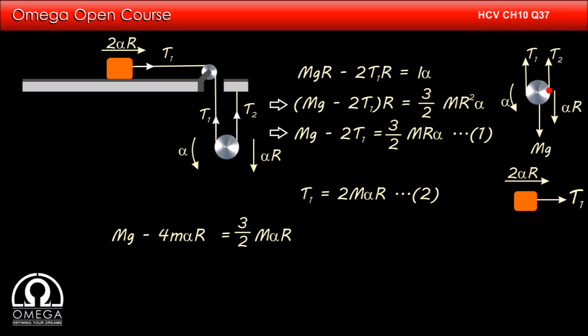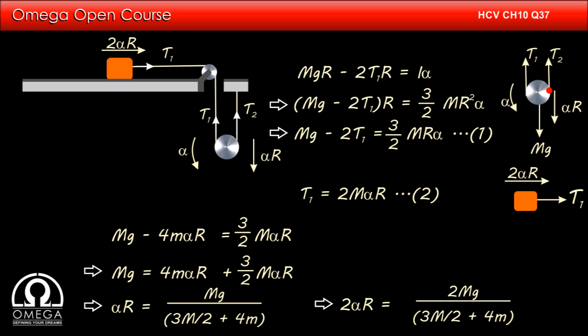Putting the value of T1 in equation 1, we get capital Mg minus 4m alpha r is equal to 3 by 2 capital M alpha r. Which implies, capital Mg is equal to 4m alpha r plus 3 by 2 capital M alpha r or alpha r is equal to 2 capital Mg divided by 3 capital M by 2 plus 4m. The acceleration of the block 2 alpha r is equal to 2 capital Mg divided by 3 capital M by 2 plus 4m.